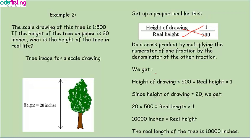Recall that the height of the drawing was given as 20. So we multiply 500 by 20, which equals the real height times 1. Then 20 times 500 gives us 10,000 inches, which equals the real height. So the real height of the tree is 10,000 inches — imagine how many pieces of paper you'd need to join together to draw that!